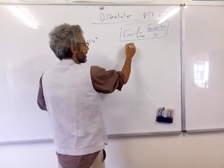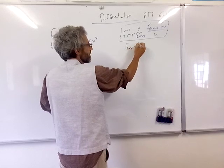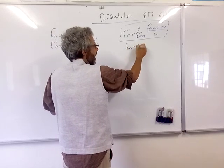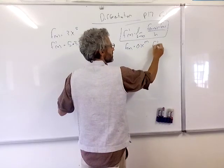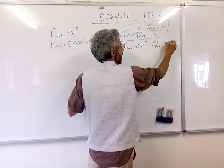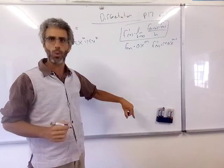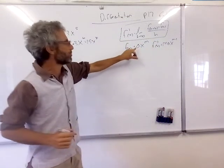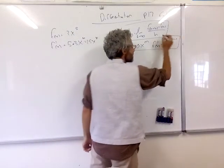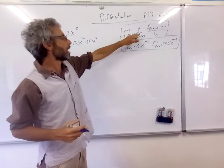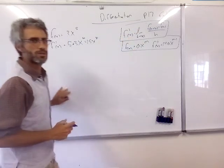Let's write down that rule. If I have a function which is ax^n, then the derivative is n·a·x^(n-1) — the exponent goes down by one and we multiply by the original exponent. That's one thing I really need you to be on top of — it's essential.